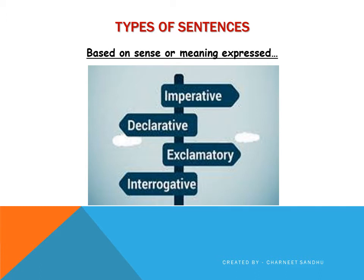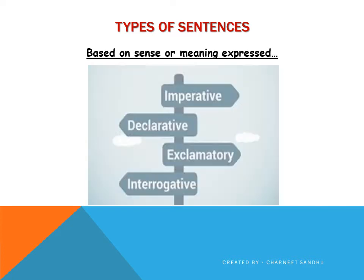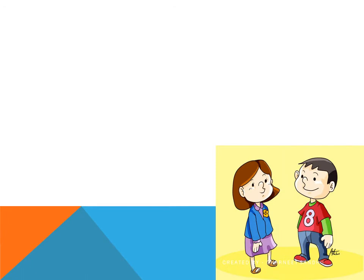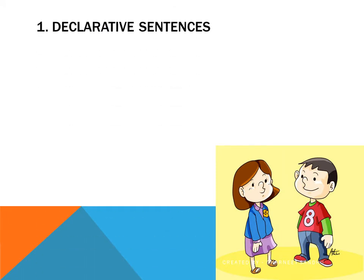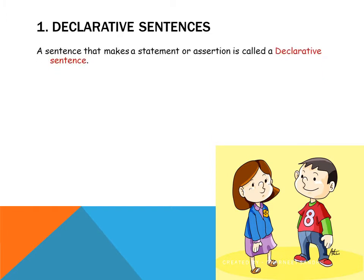Let us try to look at these types one by one and then try to differentiate between these sentences. The first type that we are going to discuss in detail is the declarative sentence. A sentence that makes a statement or assertion is called a declarative sentence.